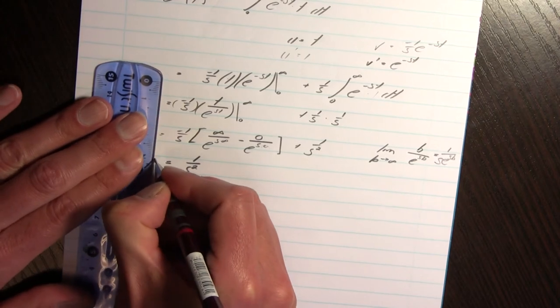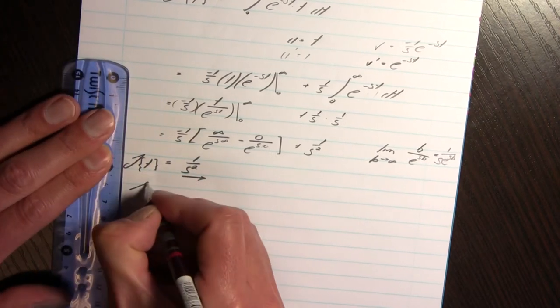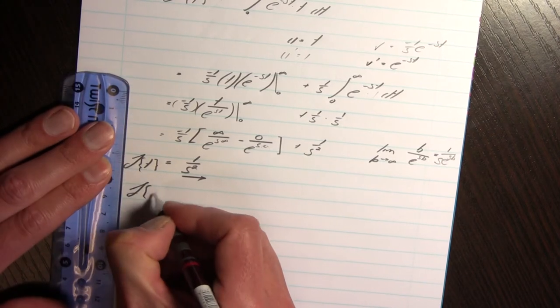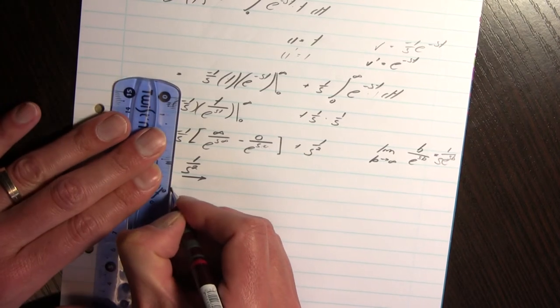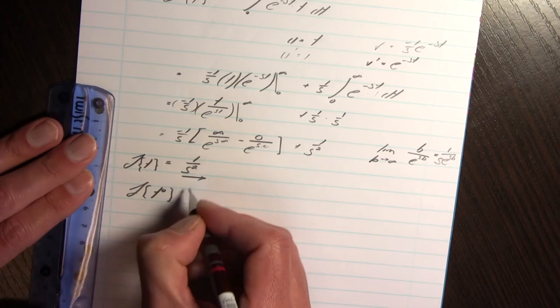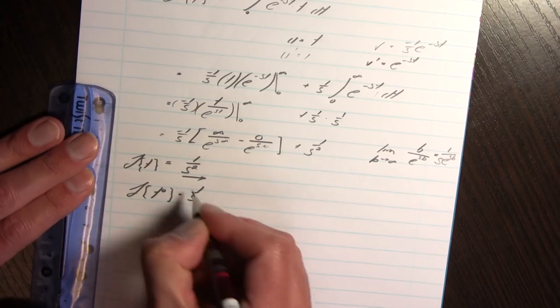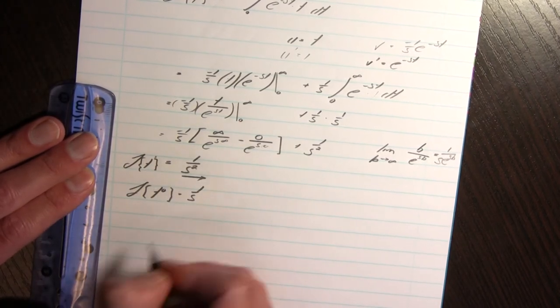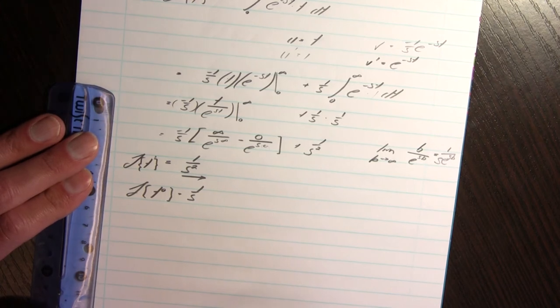Remember we showed before the Laplace transform of 1, that's the same as t to the power 0, is 1 over s. T to the power 1 is 1 over s squared. I think you can see where this is going.